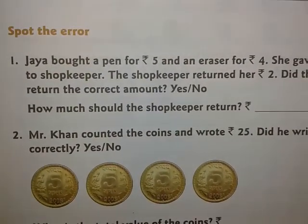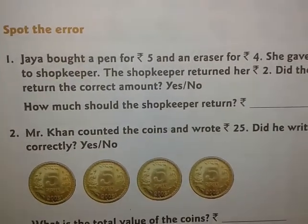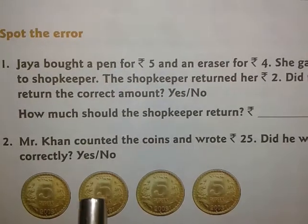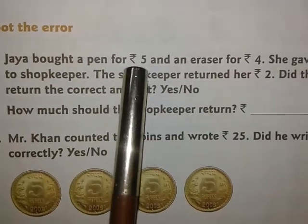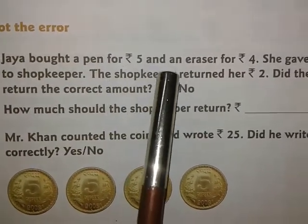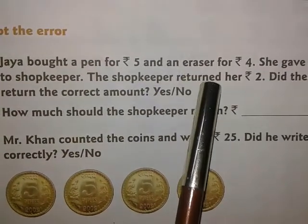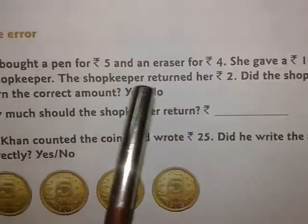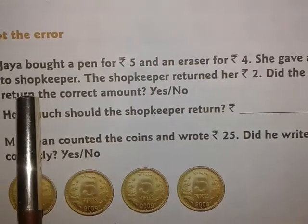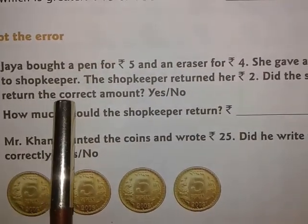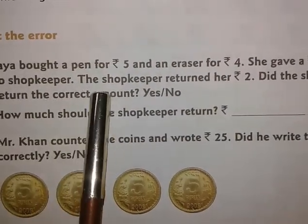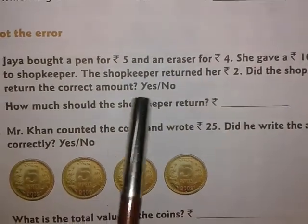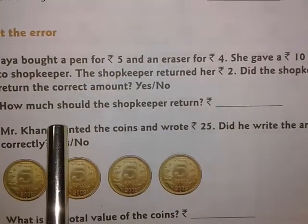This is spot the error — again an interesting thing to be done. Jaya bought a pen for Rs.5 and an eraser for Rs.4. She gave a Rs.10 note to the shopkeeper. The shopkeeper returned her Rs.2. Did the shopkeeper return the correct amount?